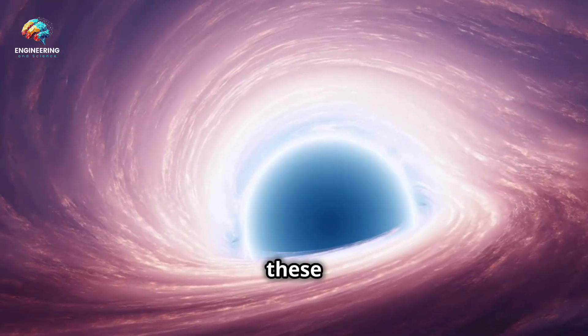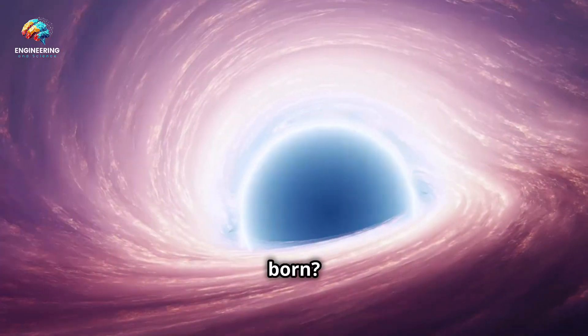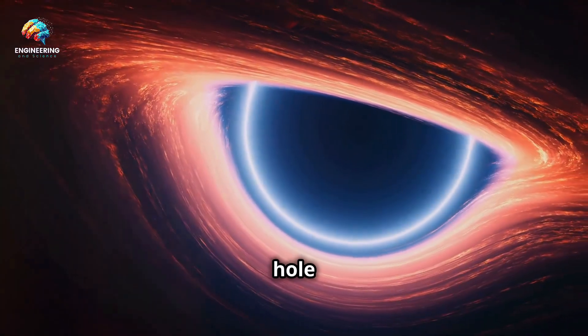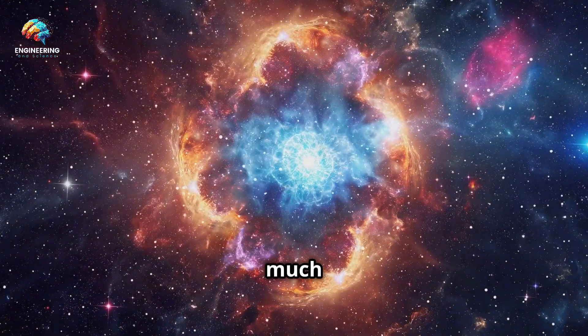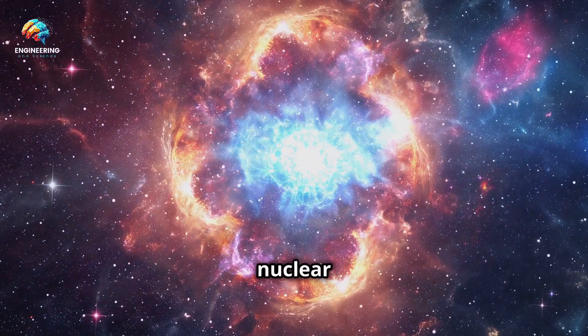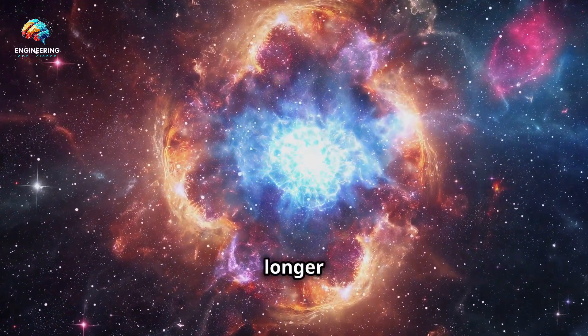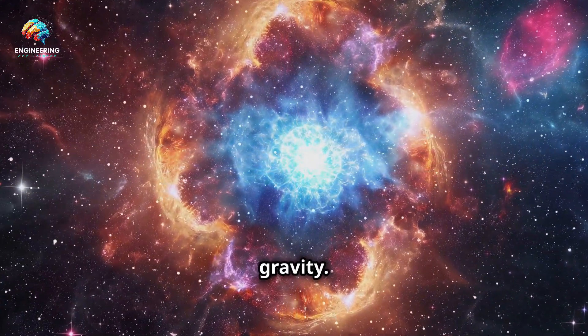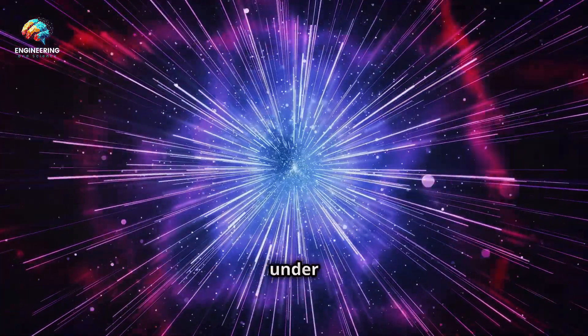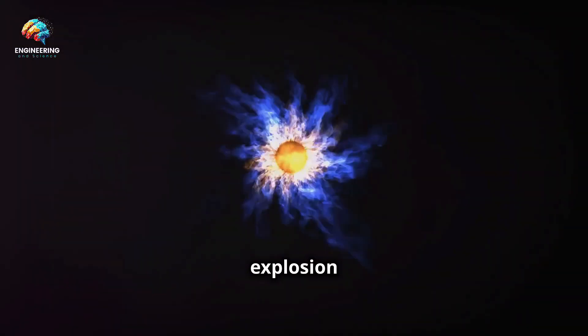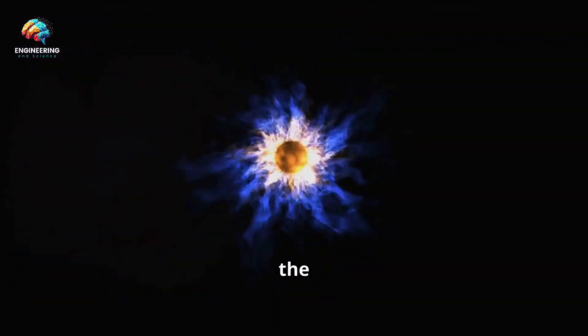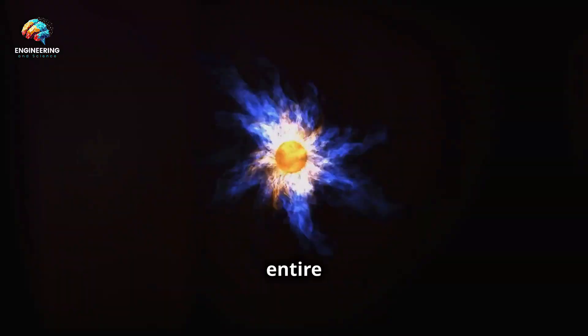How are these cosmic monsters born? The most common way a black hole forms is through the death of a massive star. When a star much larger than our sun runs out of nuclear fuel, it can no longer support itself against its own gravity. The star's core collapses under its own weight, creating a supernova explosion. This explosion is one of the most energetic events in the universe, briefly outshining entire galaxies.